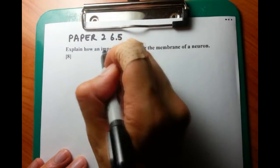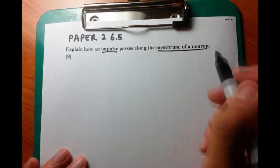Explain how an impulse passes along the membrane of a neuron. A question that I really enjoy.